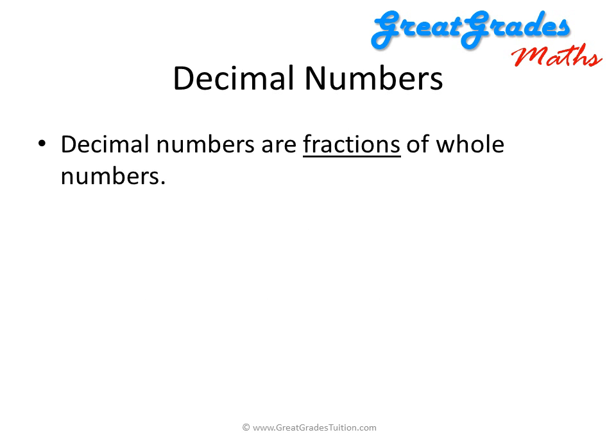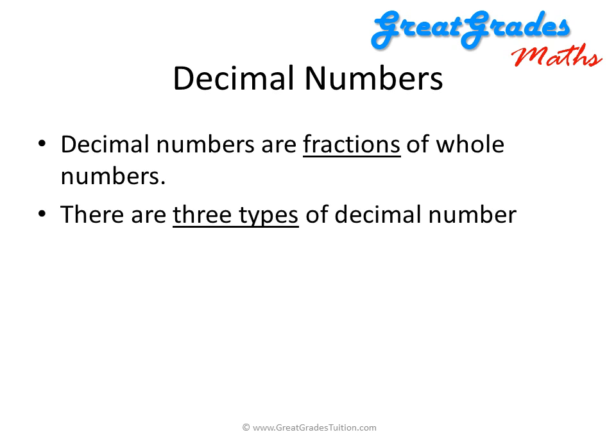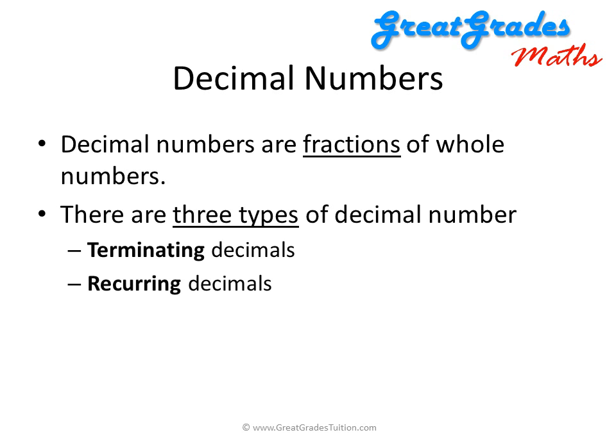Decimal numbers are fractions of whole numbers and there are three different types of decimal number that you need to be aware of: firstly terminating decimals, secondly recurring decimals, and then last of all irrational decimals.